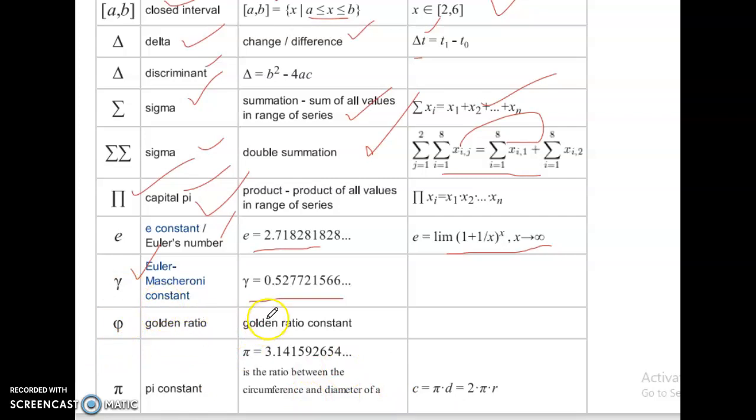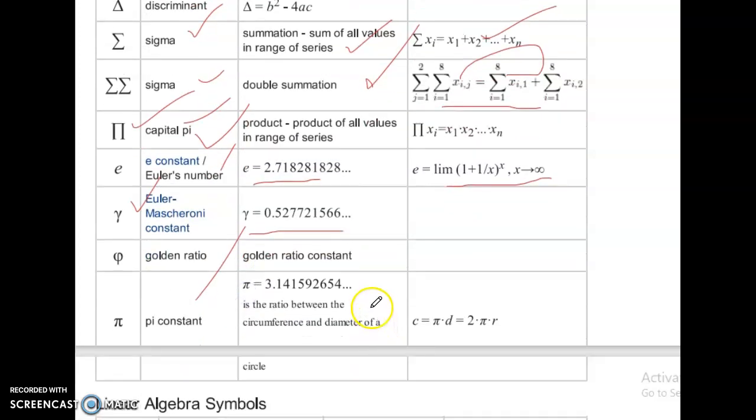Phi. Golden ratio. Golden ratio constant. Phi constant. Phi equal to 3.141592654 is the ratio between the circumference and the diameter of a circle. c equal to pi d equal to 2r.